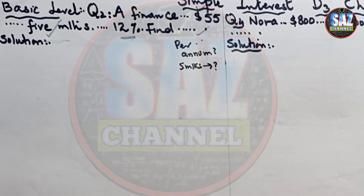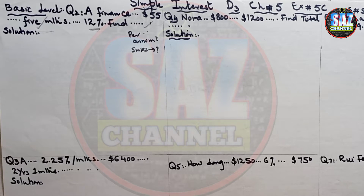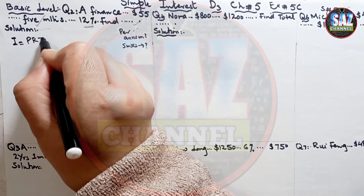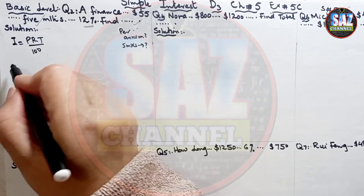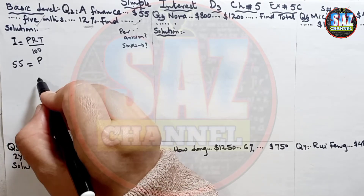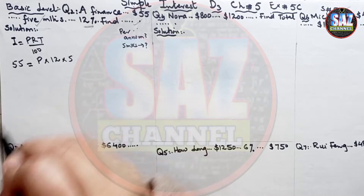The important thing we have to understand is we have to find the sum of money borrowed for 5 months. First, we have to find how much the principal amount is, and then add the simple interest to get the total amount borrowed. The formula for interest is I = PRT/100. The amount of interest is 55. The principal amount is not given. Rate is 12% and time is 5 months, written as 5/12, upon 100.